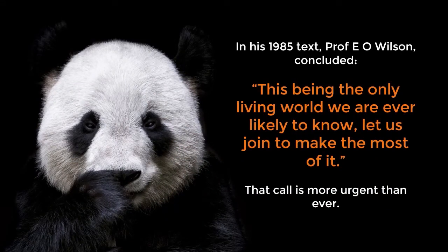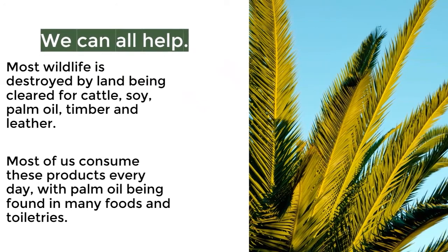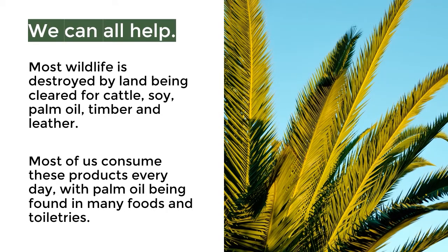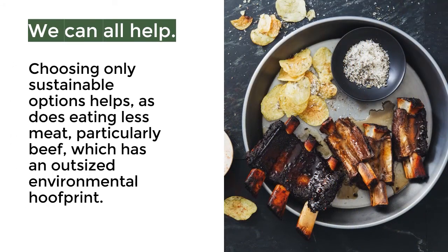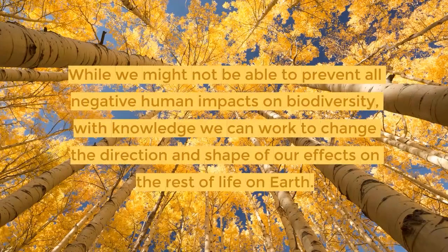In his 1985 text, Prof. E.O. Wilson concluded: 'This being the only living world we are ever likely to know, let us join to make the most of it.' That call is more urgent than ever. We can all help. Most wildlife is destroyed by land being cleared for cattle, soy, palm oil, timber, and leather — products most of us consume every day, with palm oil found in many foods and toiletries. Choosing only sustainable options can actually help, as does eating less meat, particularly beef, which has an outsized environmental footprint. While we might not be able to prevent all negative human impacts on biodiversity, with knowledge we can work to change the direction and shape of our effects on the rest of life on Earth.